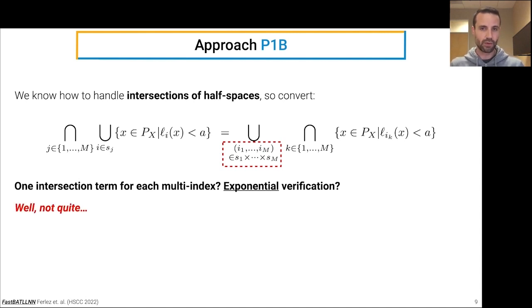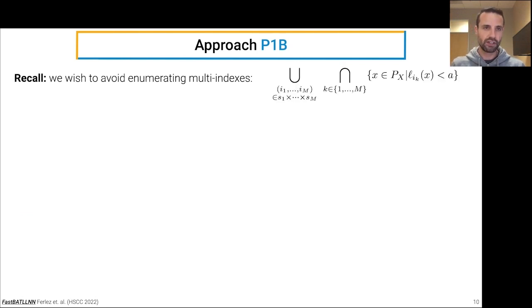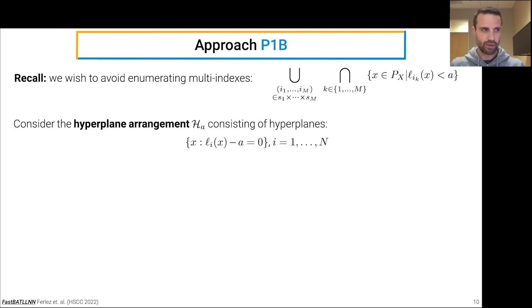Well, we don't have to quite settle ourselves with that. We just have to be a little bit more clever. So recall that we want to avoid enumerating all of the multi-indexes in this set. So what can we do? We can consider a hyperplane arrangement, H_A, where A is the output constraint property. And these hyperplanes are formed by shifting each of the local linear functions precisely by this constraint.